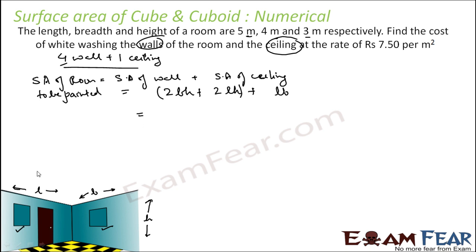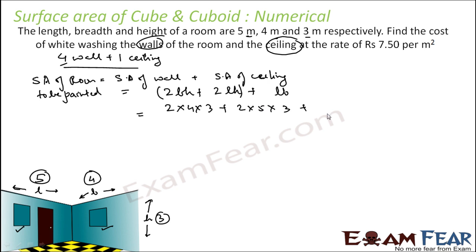Now let's put in the values: length = 5, breadth = 4, height = 3. So we calculate 2 × 4 × 3 plus 2 × 5 × 3 plus 5 × 4, which gives 24 + 30 + 20 = 74 meter square. That is the area of the room to be painted.